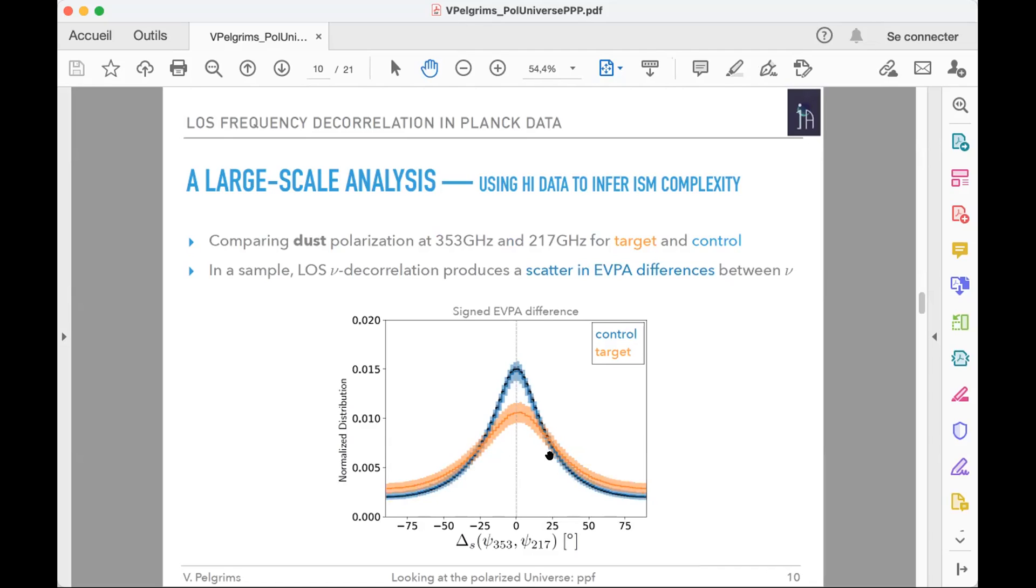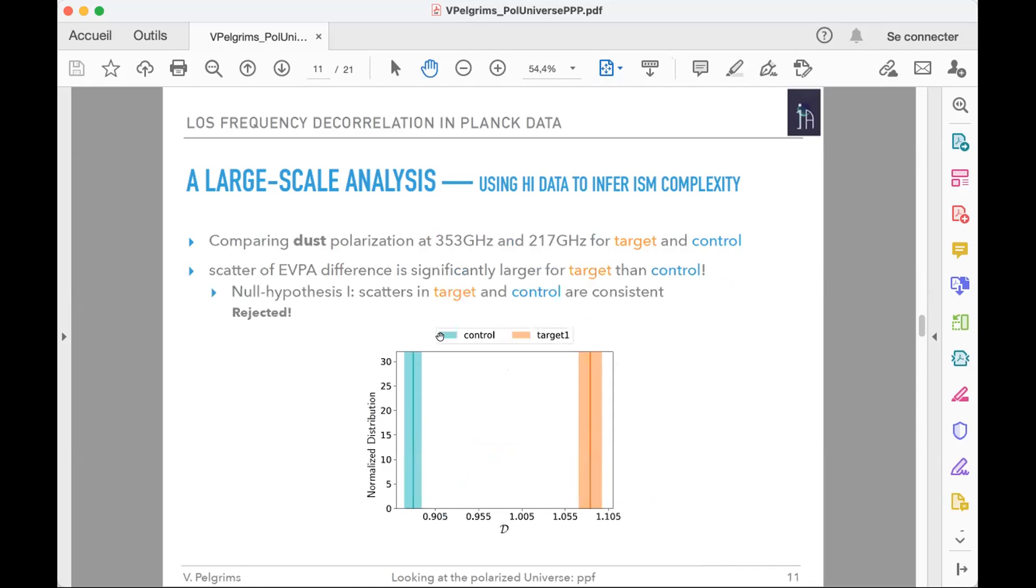What we got is the following: histograms of EVPA differences for the target sample in orange and for the control sample in blue. As you can see, the scatter in the orange histogram is larger. If we consider the circular standard deviation of these histograms as an indicator of the scatter and call it D, the scatter of EVPA difference is significantly larger for the target sample than in control. We have to reject with very high significance the null hypothesis saying that the scatters are both consistent.